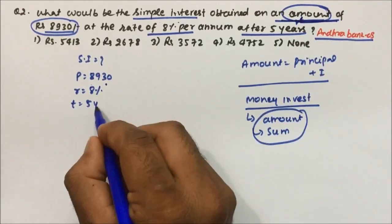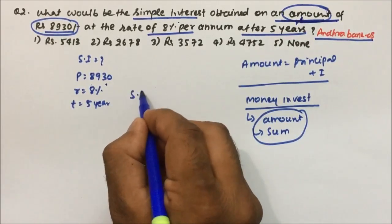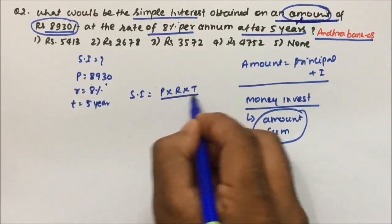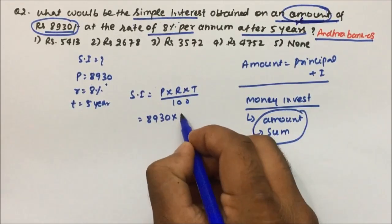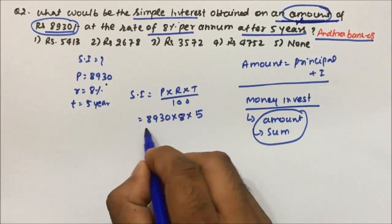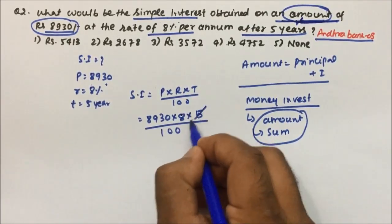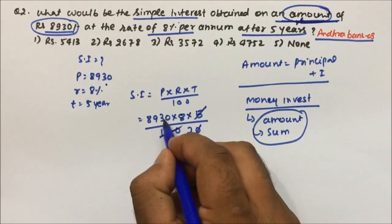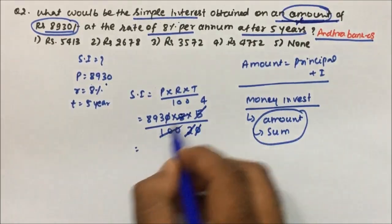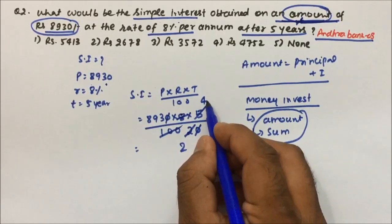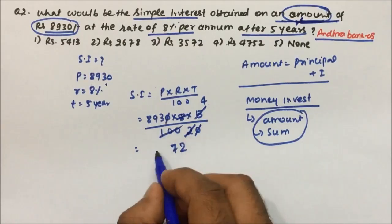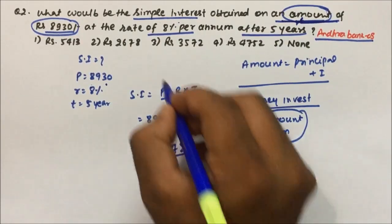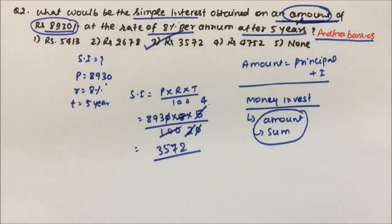Using the formula: SI = (P × R × T) / 100 = (8930 × 8 × 5) / 100. The two zeros cancel, leaving 8930 × 8 / 20 — dividing by 20: 4 × 3 = 12; 4 × 9 = 36 + 1 = 37; 4 × 8 = 32 + 3 = 35. So the simple interest = ₹3572, which is option 3, the correct answer. Thanks for watching the video.